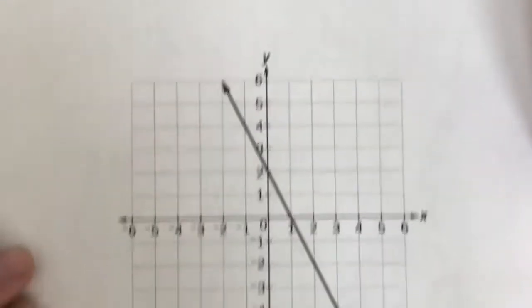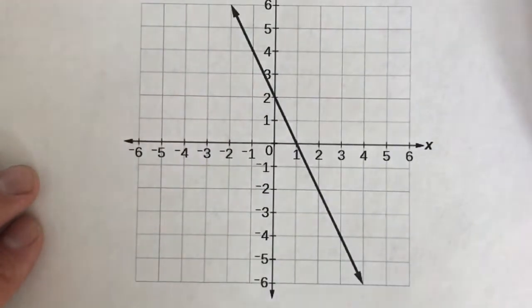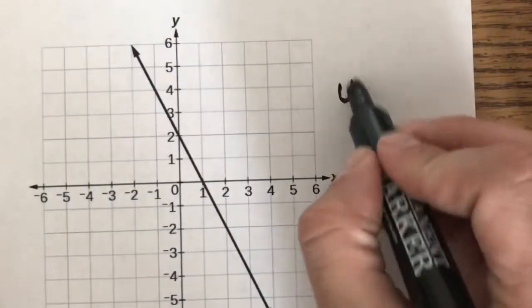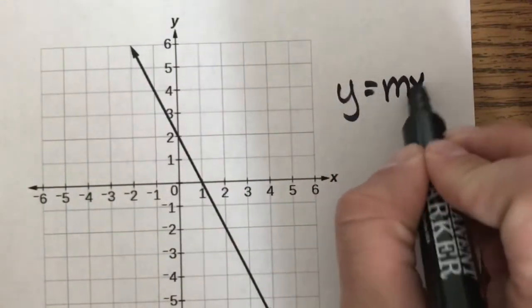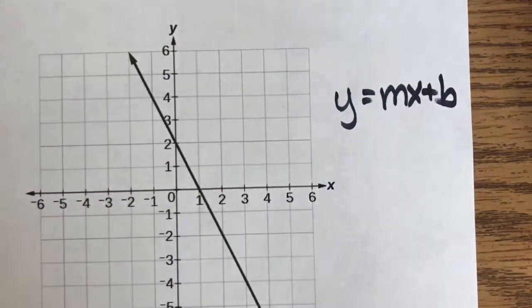All right, my job is to find the equation of this line right here. In order to find the equation of a line, I need something in the form y equals mx plus b. m is the slope, b is the y-intercept.